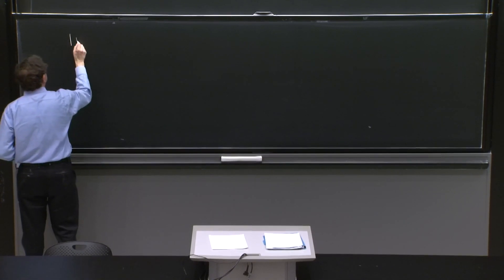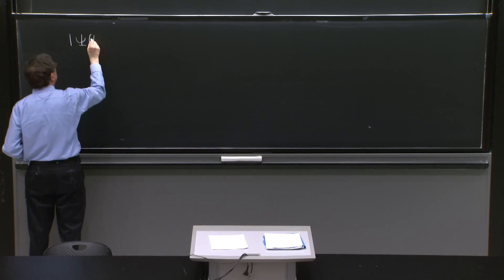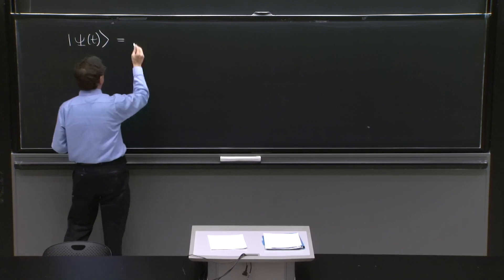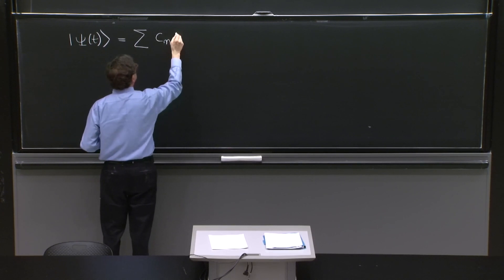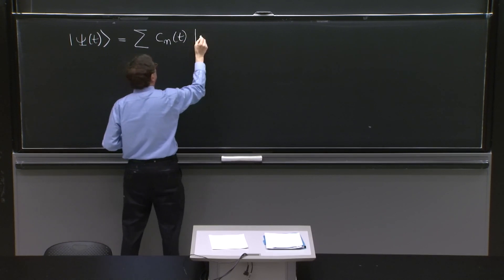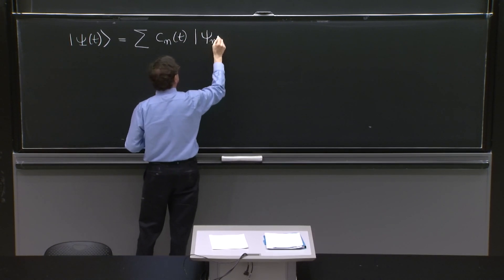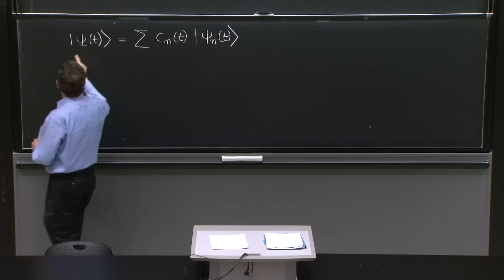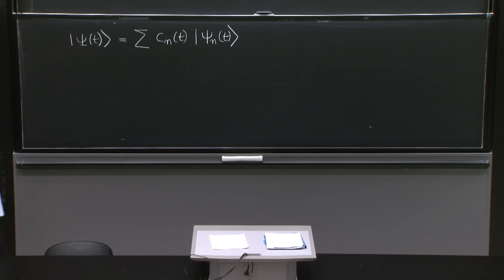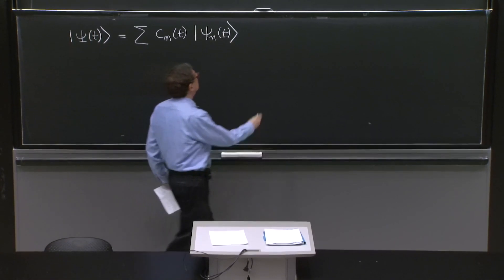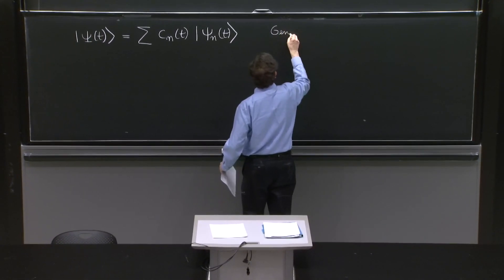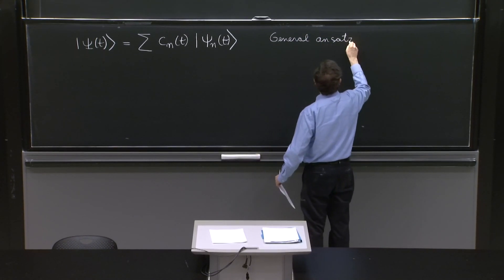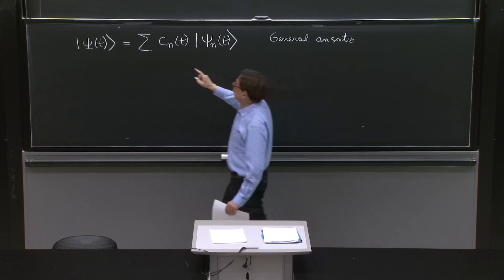So if we have a state psi of t, we'll write it as a superposition of instantaneous eigenstates. So this is a general ansatz for a solution.